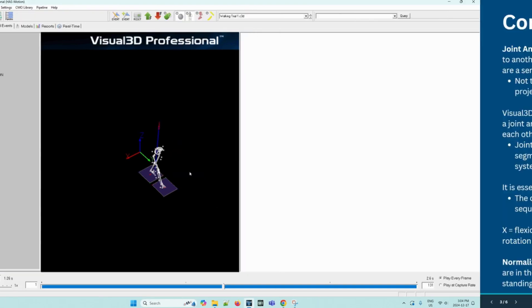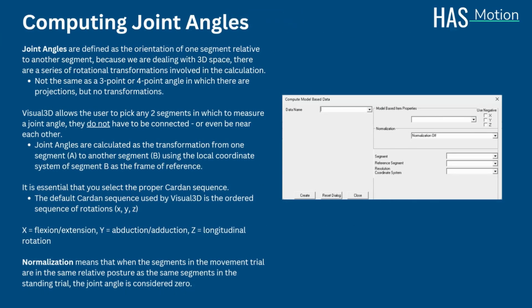Our first step in this tutorial is to compute joint angles. Joint angles are defined as the orientation of one segment relative to another. Because we are dealing with 3D space, there are a series of rotational transformations involved in the calculation. A joint angle is not the same as a 3-point or 4-point angle in which there are projections but no transformations.